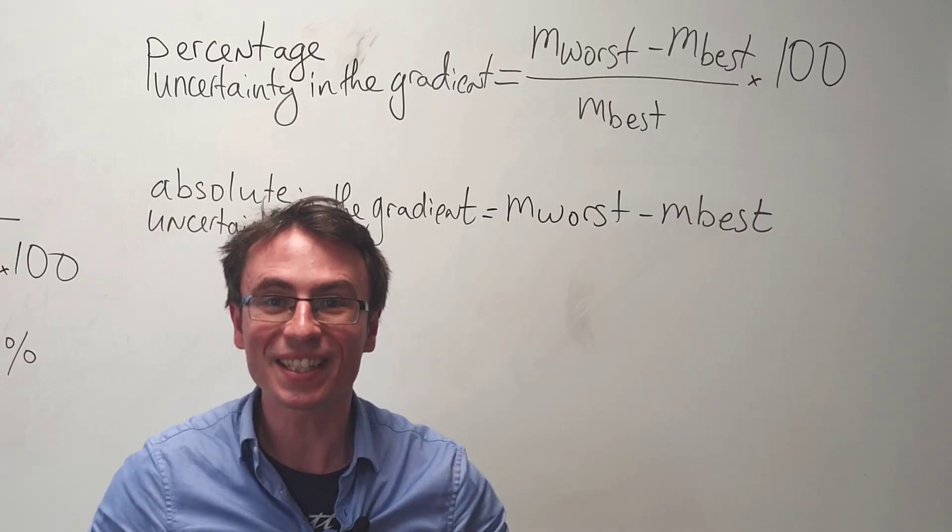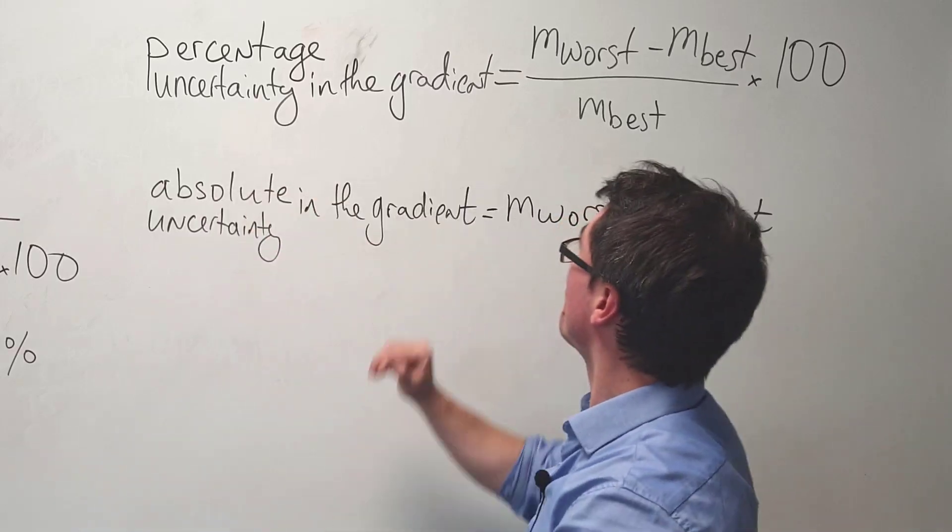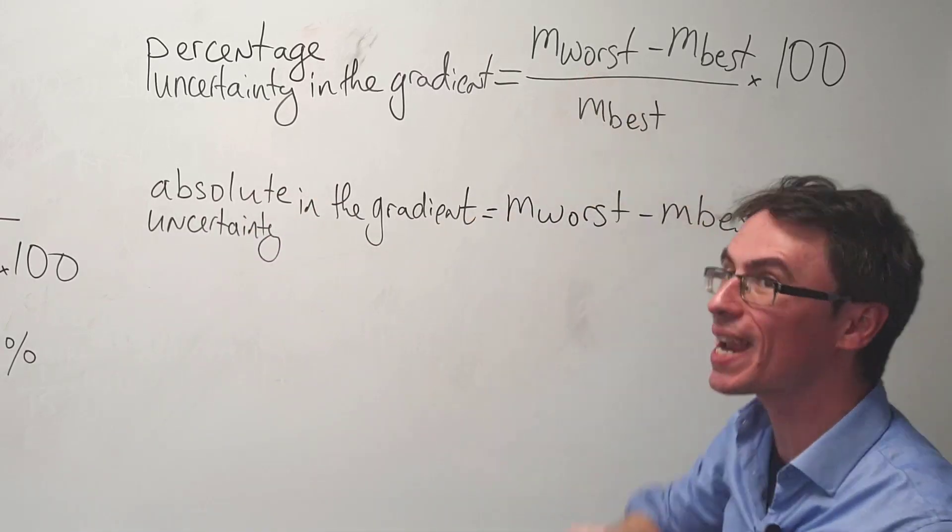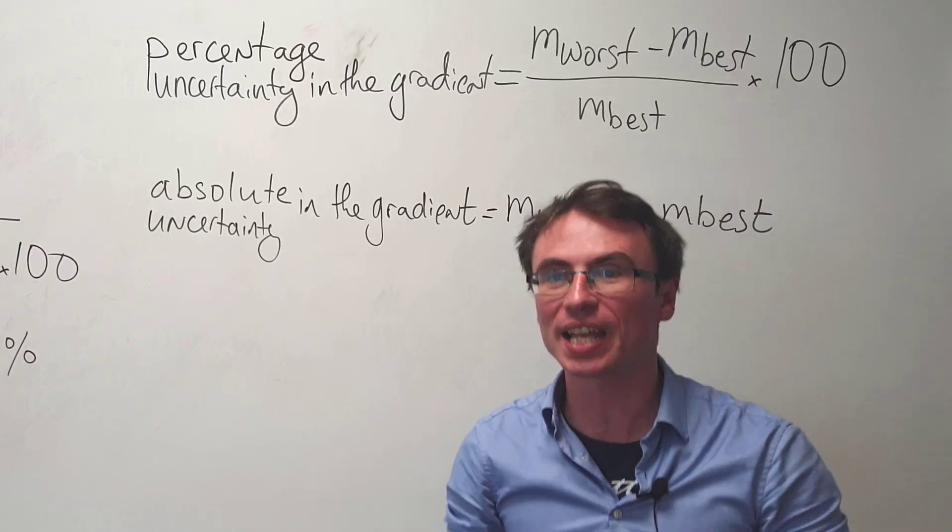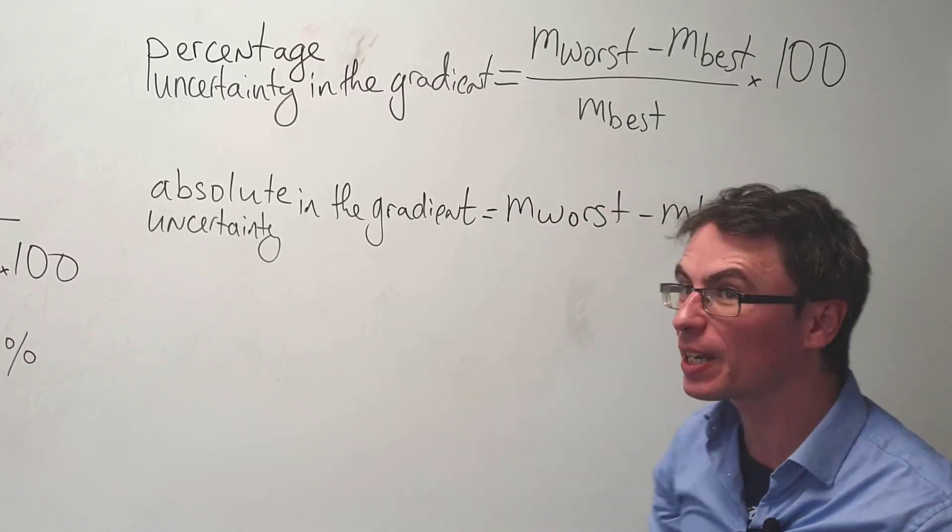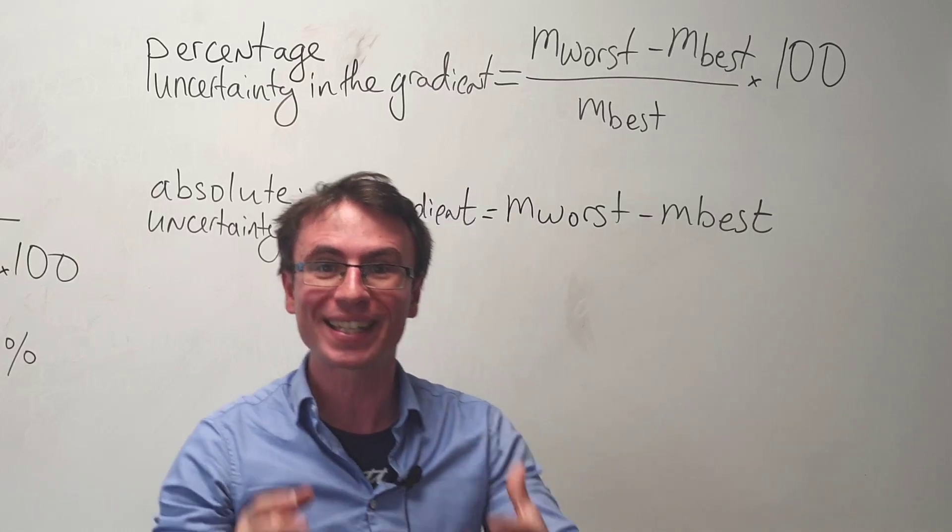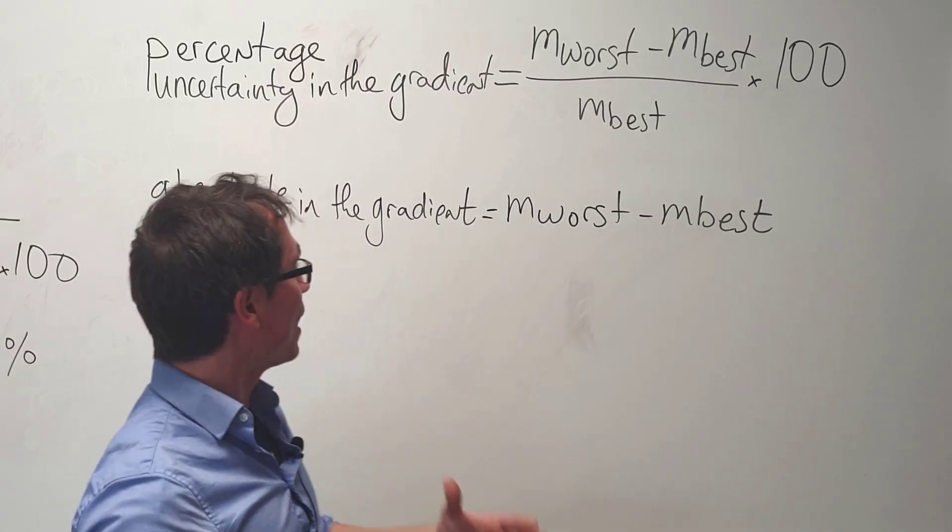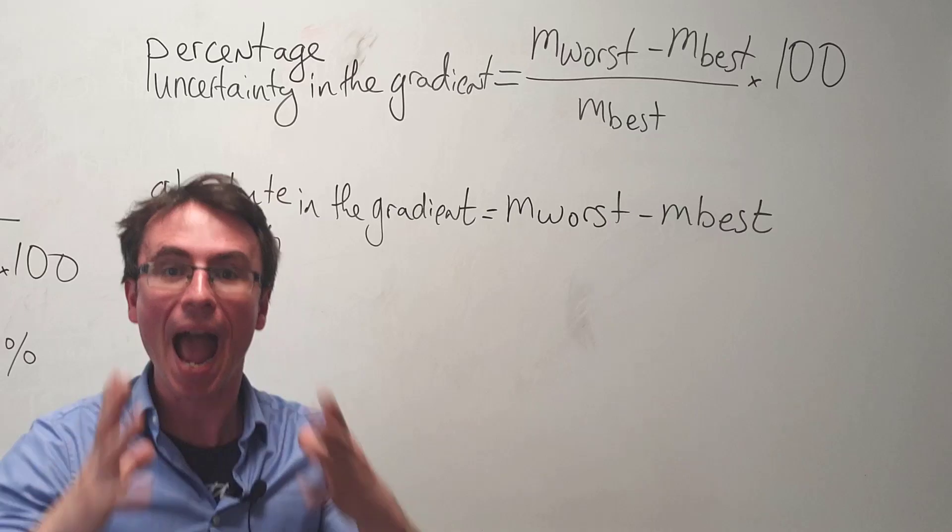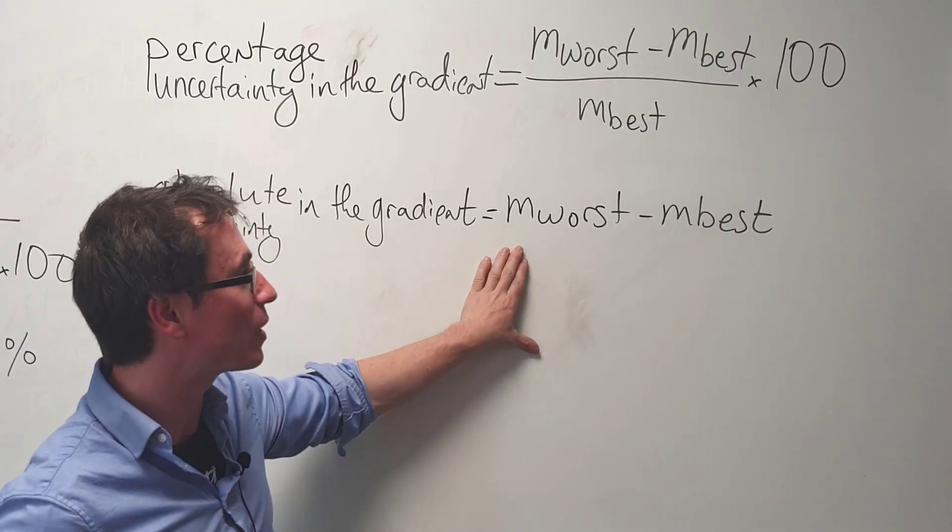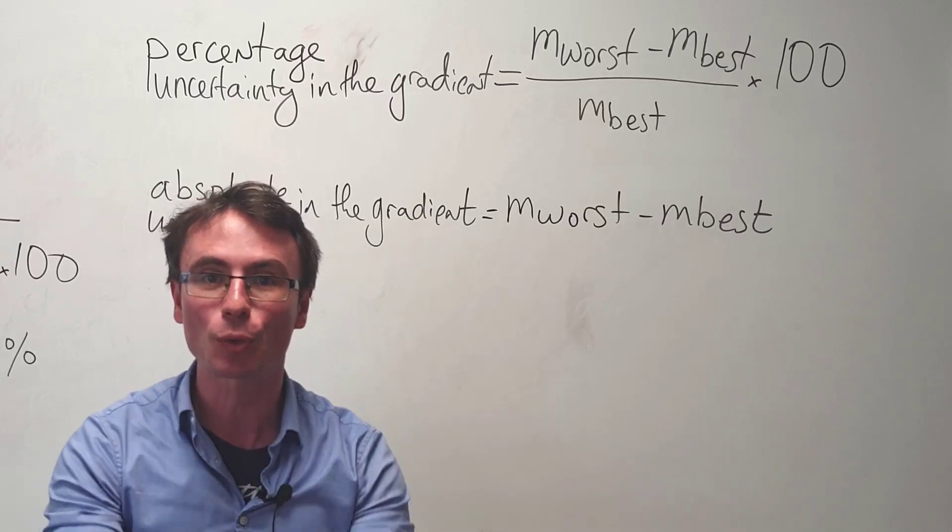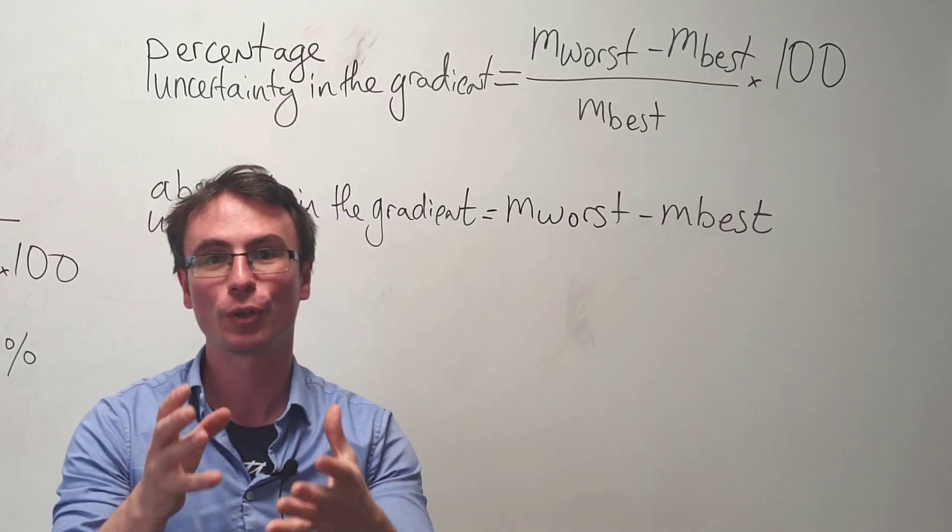The percentage uncertainty in the gradient will then be equal to the gradient of the line of worst fit take away the gradient of the line of best fit divided by the gradient of line of best fit times 100. If we need to estimate the absolute uncertainty in the gradient, this will just be equal to the difference between the two gradients.